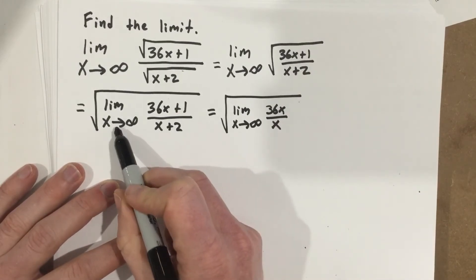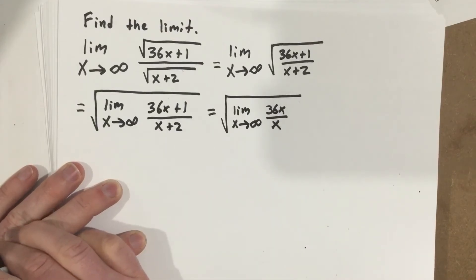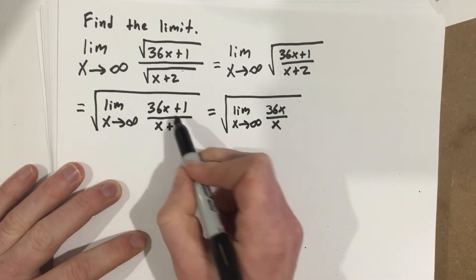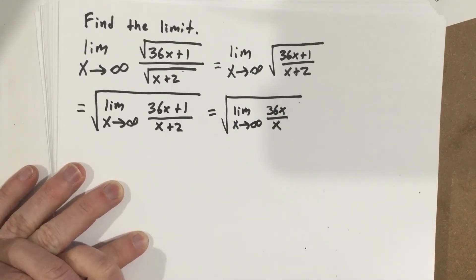Now I can only do this because I'm doing the limit as x approaches infinity. That's not an algebra move that you can use. We just know that as we approach infinity, if you add 1 and you add 2, that's not really affecting the problem. They're insignificant.